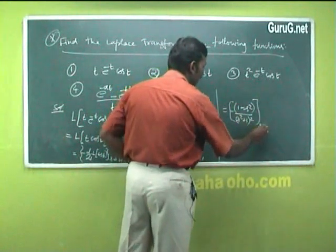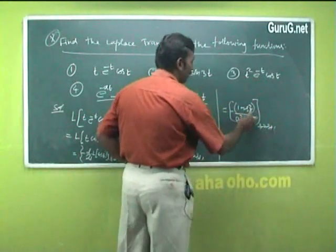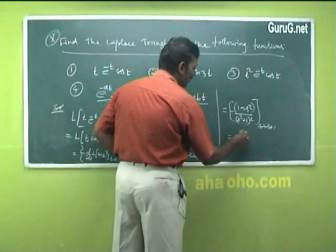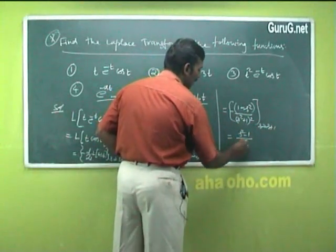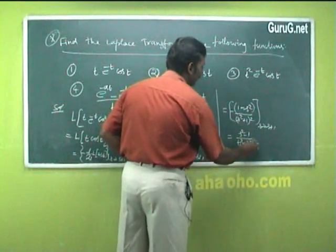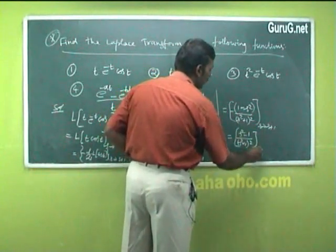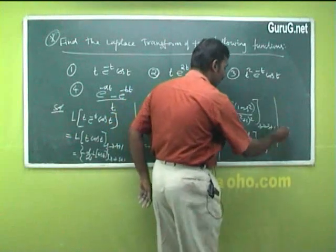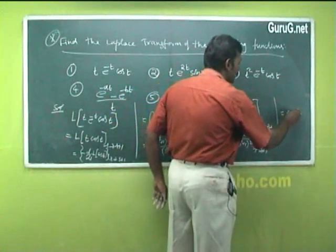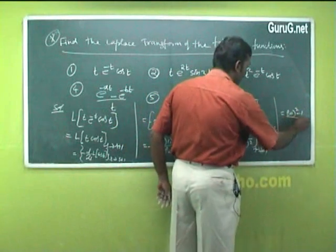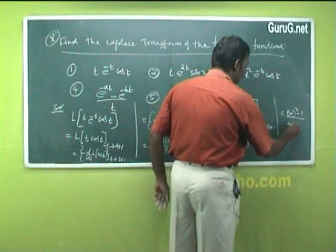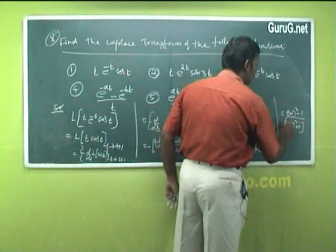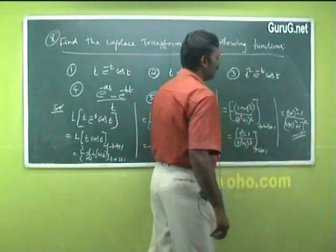Now s is replaced by s+1, giving (s+1)² minus 1 in the numerator and [(s+1)² + 1]² in the denominator. So the result is [(s+1)² - 1] / [(s+1)² + 1]², which is the correct result.